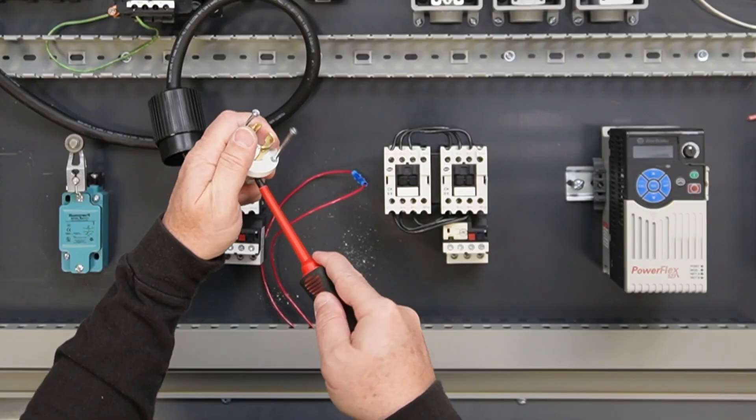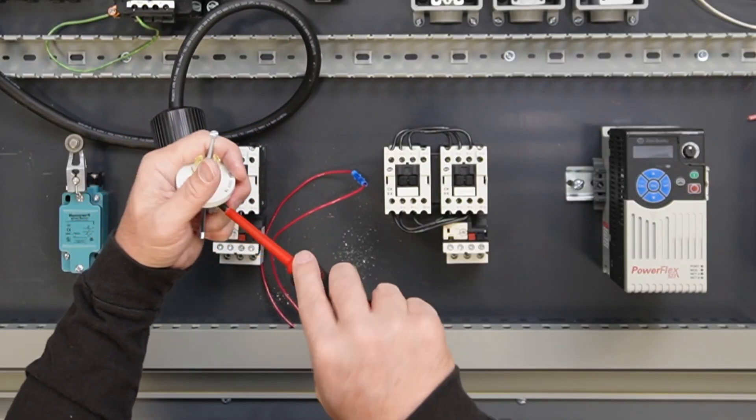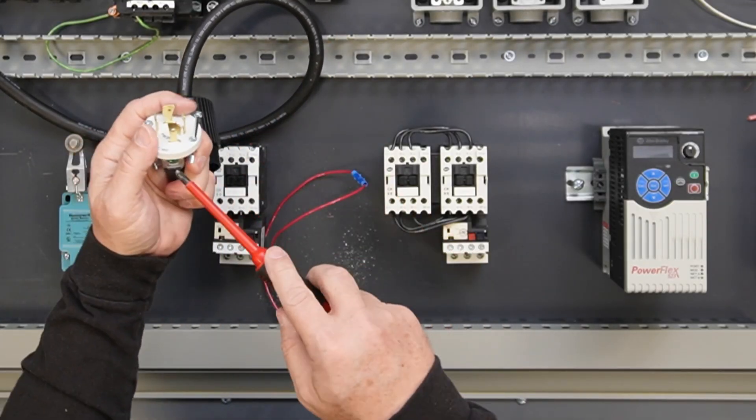Check the tightness of all connections before installing the cover. 18 inch-pounds is approximately one-hand tight.